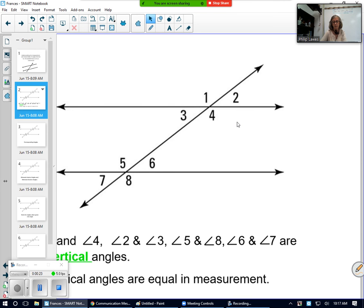You've already learned that angles that are diagonal from each other are equal. There's a special name for those angles and those are called vertical angles.